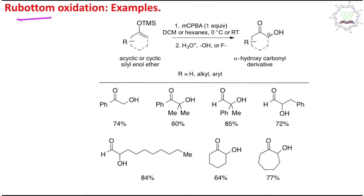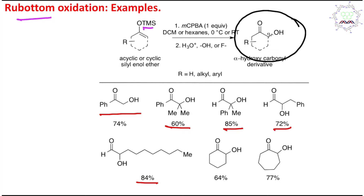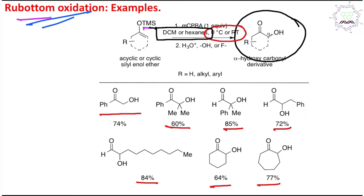In short, TMS means trimethylsilyl. This silyl enol ether will be oxidized using MCPBA. This oxidation is very facile, and what it will ultimately result in is the alpha-hydroxy ketone — just as we discussed in the mechanism. You can see the substrate scope — different categories and types of substrate with yields of 60, 85, 72, 84, 64, 77 percent. So a wide variety of differently functionalized substrates can be converted to the corresponding alpha-hydroxy ketone using Rubottom oxidation under mild conditions of 0°C to room temperature in DCM or hexane.